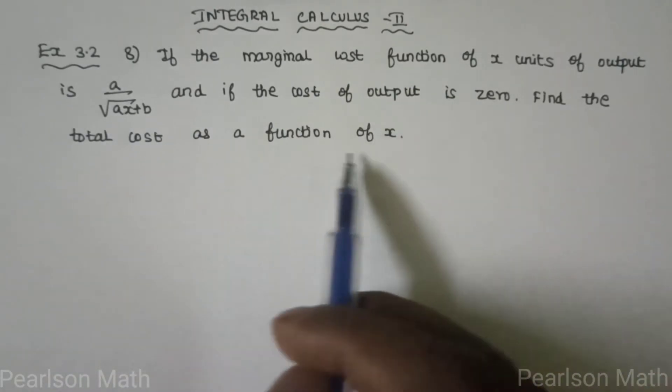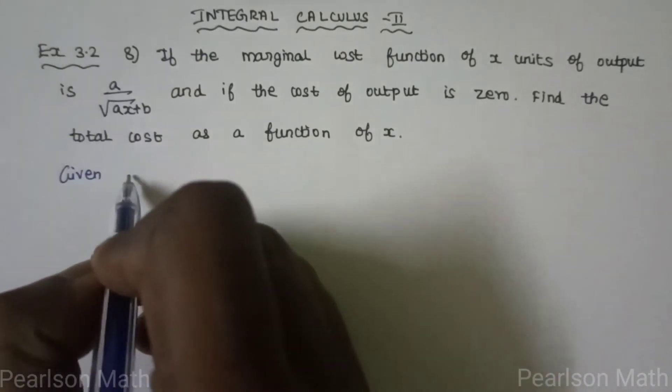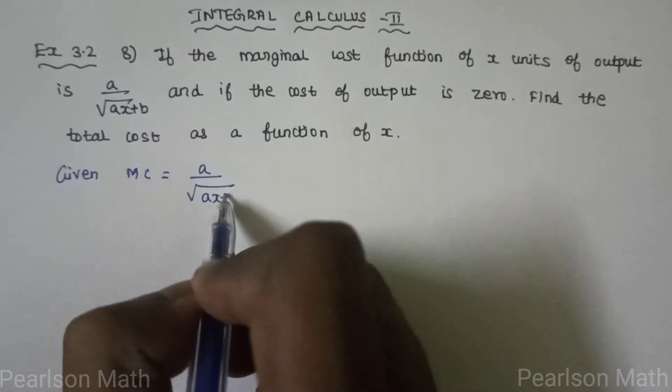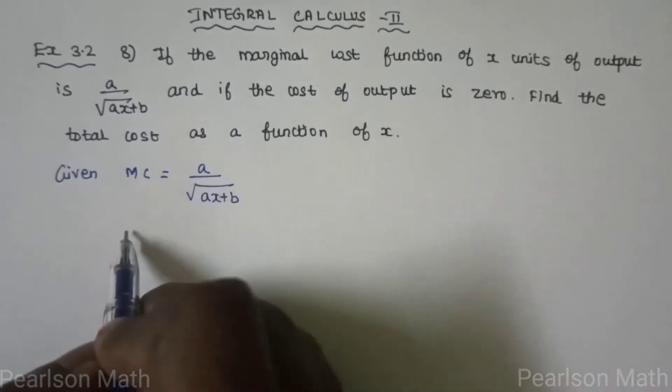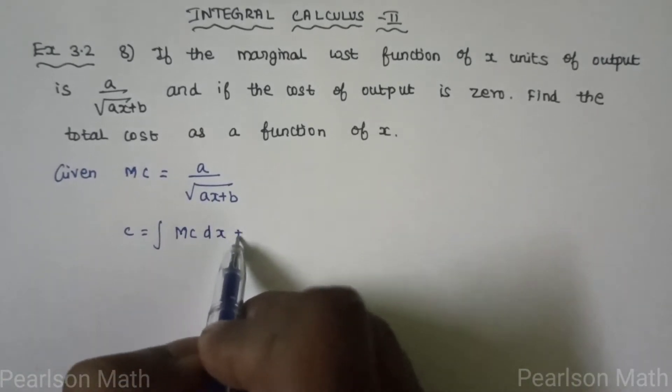So when output is zero, we have total cost function. Given: MC equals a by root of ax plus b. We have total cost equals integration of MC dx plus k, as the total cost formula.